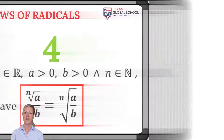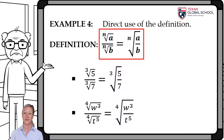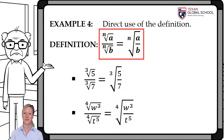The following radical law indicates that the quotient of the nth root of a over the nth root of b is equivalent to the nth root of the quotient a over b. For example, the cube root of 5 over the cube root of 7 can be represented as the cube root of 5 sevenths. Also, the fourth root of w cubed over the fourth root of t to the fifth power can be expressed as the fourth root of w cubed over t to the fifth power.